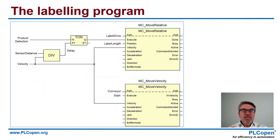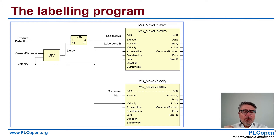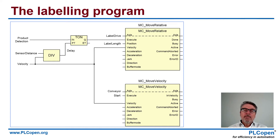If we look at the application program for this, you see first of all the two motors that we have. The Move Velocity on the bottom drives the conveyor with a certain velocity specified on the left. On the top, you see the Move Relative for the label. There is a certain label length shown as a position input, and we want to execute it. We want to start it at the moment that the product is detected, and the sensor distance defined by the velocity gives it the necessary time.